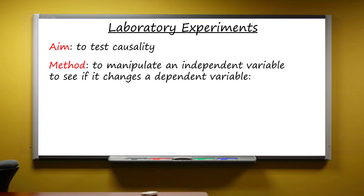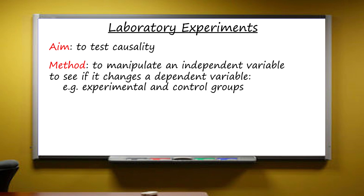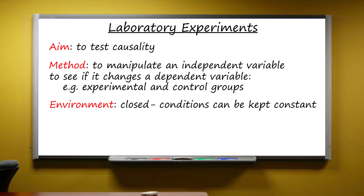A common way of trying to isolate the independent variable is by randomly dividing participants into an experimental and a control group, and then only applying the independent variable to the experimental group. The laboratory is a closed environment where the influence of other variables can, as far as possible, be kept constant.